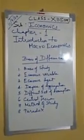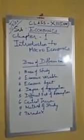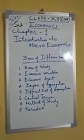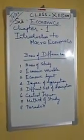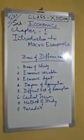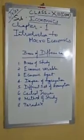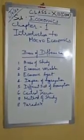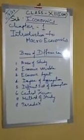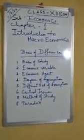The fourth basis is degree of aggregation. In microeconomics there is a limited degree of aggregation, whereas in macroeconomics the degree is quite broad in terms.